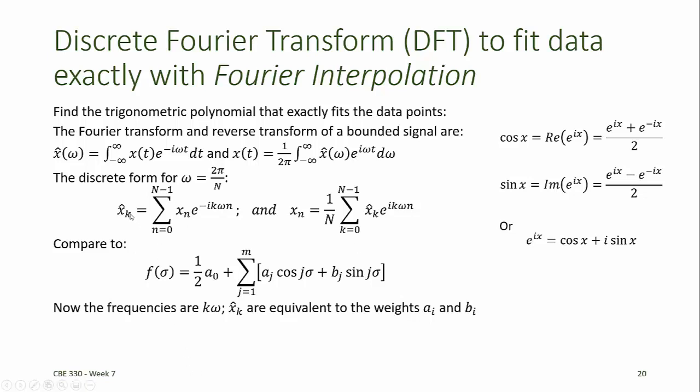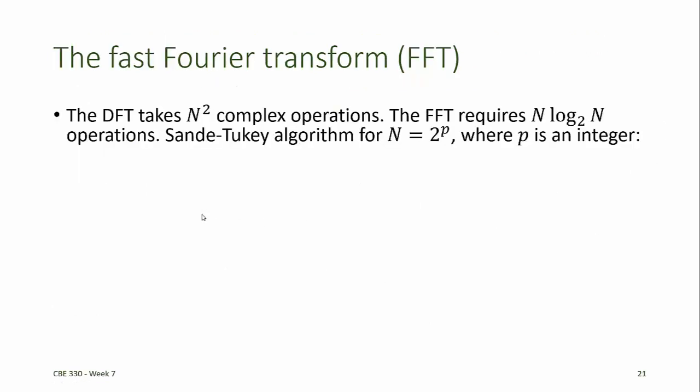Computing the x hat k values from all of the x sub n, from sums over all of the x sub n, requires a large number of complex operations. Instead, we'll use what's called the fast Fourier transform. Where the discrete Fourier transform requires approximately n squared complex operations, the fast Fourier transform requires n log base 2 of n operations.